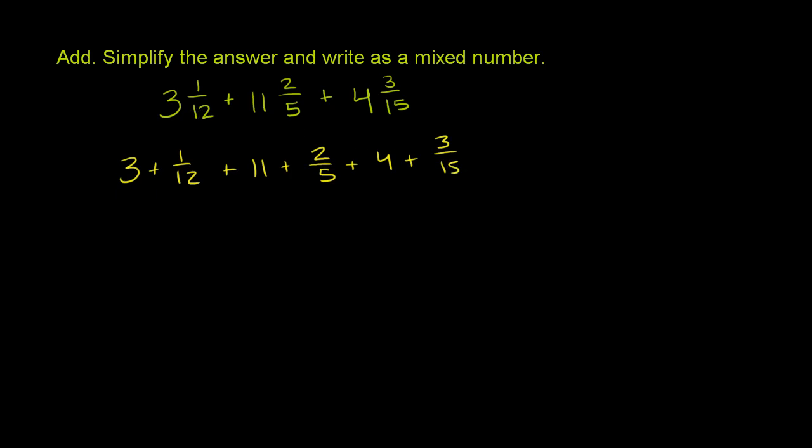The mixed number 3 and 1/12 just literally means 3 and 1/12, or 3 plus 1/12. And since we're just adding a bunch of numbers, order doesn't matter. So we could add all the whole numbers at once.